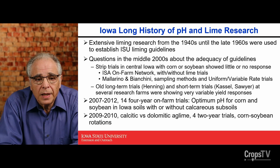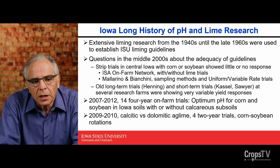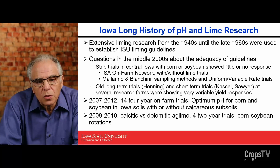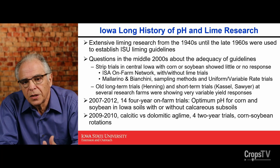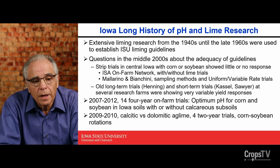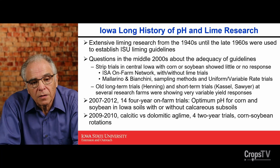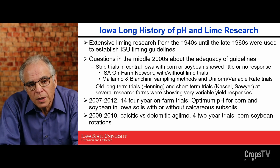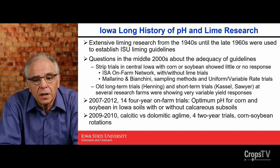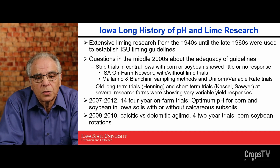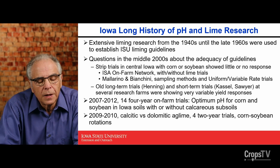One important issue in the Iowa lime recommendation — which is ages old — is that the optimum pH for corn and soybean in soils associated with calcareous subsoil is lower, about 6.0, compared with other soil associations like in eastern or southern Iowa that don't have calcareous soils. Because of all these questions, from 2007 to 2012, we got funding mainly from the Iowa Soybean Association and also the Limestone Association, and conducted 14 four-year on-farm trials. The main objective was to check if the optimum pH for corn and soybean was correct and to check the issue of calcareous subsoils. There were also questions about dolomitic lime from a quarry in eastern Iowa.